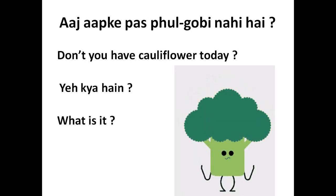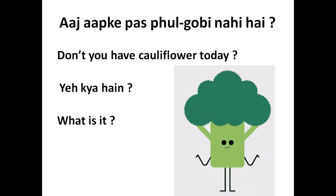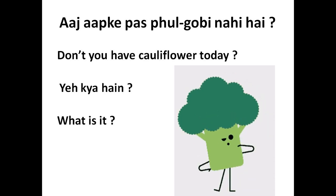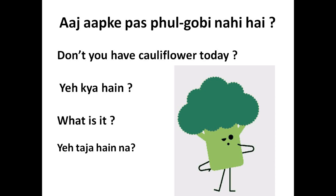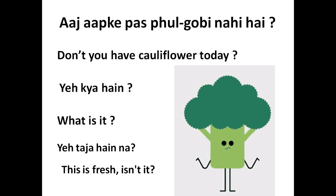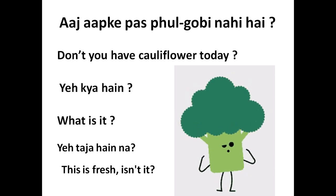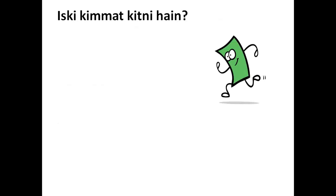Yeh kya hai? — If you don't know the name of a vegetable, you can ask: 'What is it?' or 'What do we call it?' Kya yeh taza hai? — To ask about freshness, say: 'Is this fresh, isn't it?' Aur iska daam kitna hai? — 'What is the price of this?'